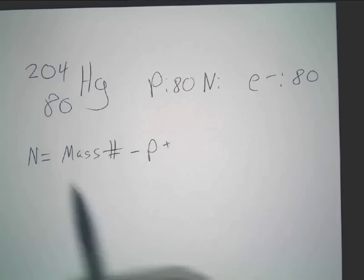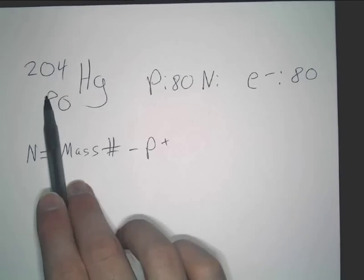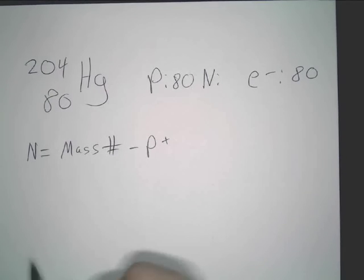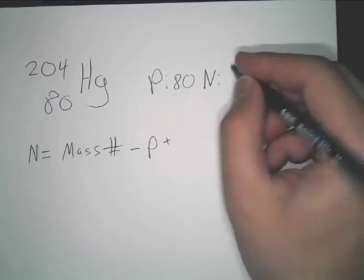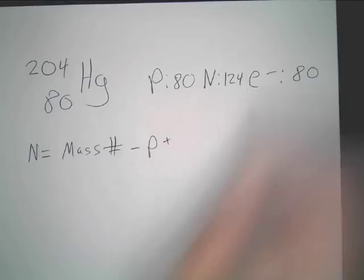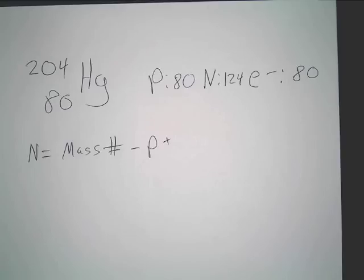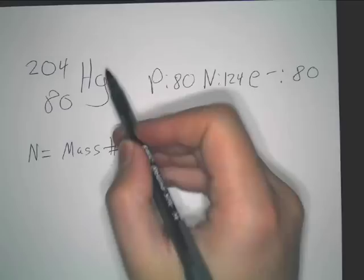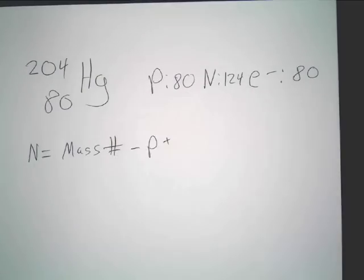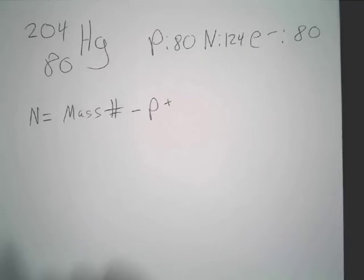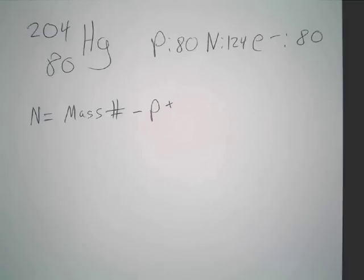Now, we know that this is a neutral atom, so the electrons will be the same thing. And then, in this case, the neutrons, it's actually a very simple subtraction problem here. It's just 204 minus 80.